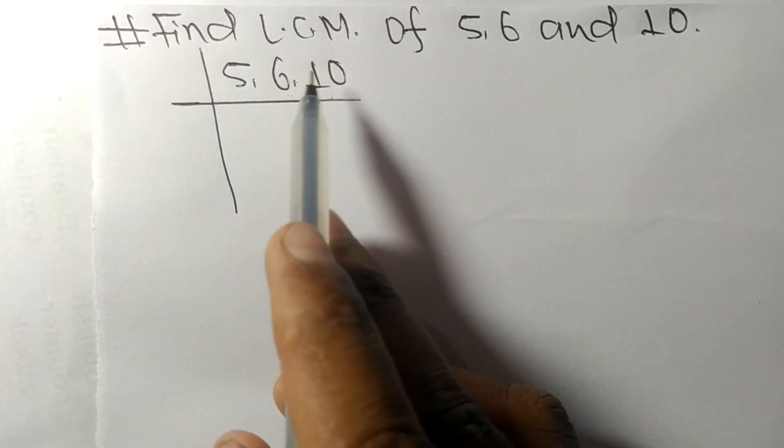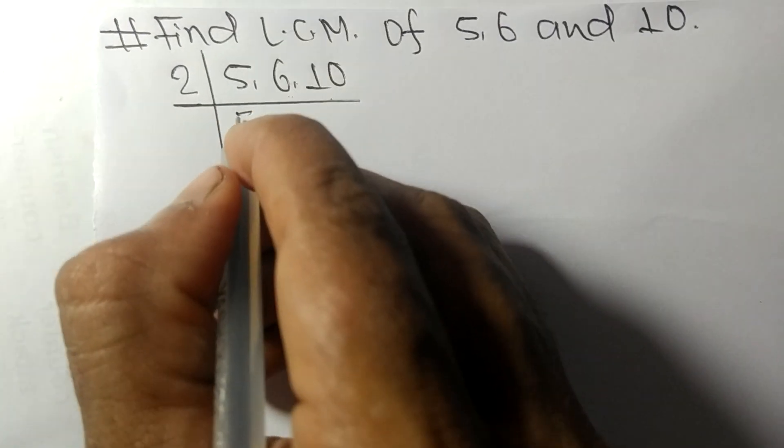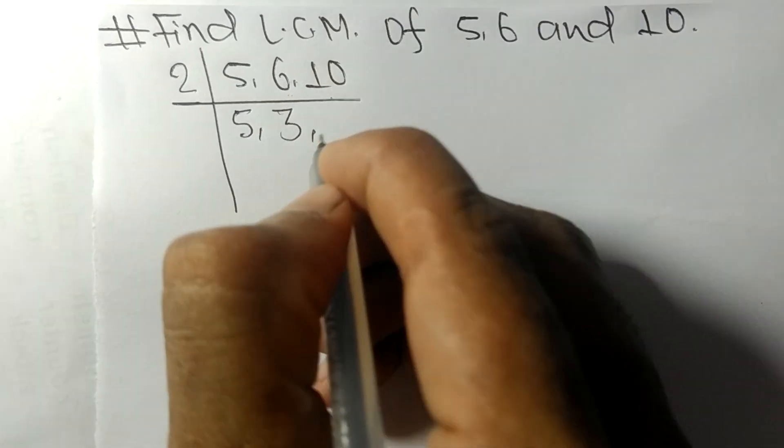10 are exactly divisible by 2. 5 not divisible so it is same. 2 times 3 mean 6, 2 times